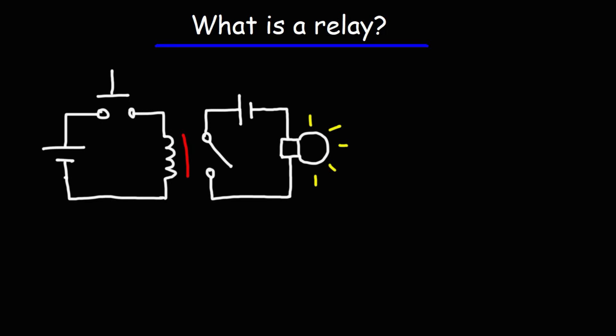So what exactly is a relay and how does it work? A relay is basically a switch that is operated by electricity.